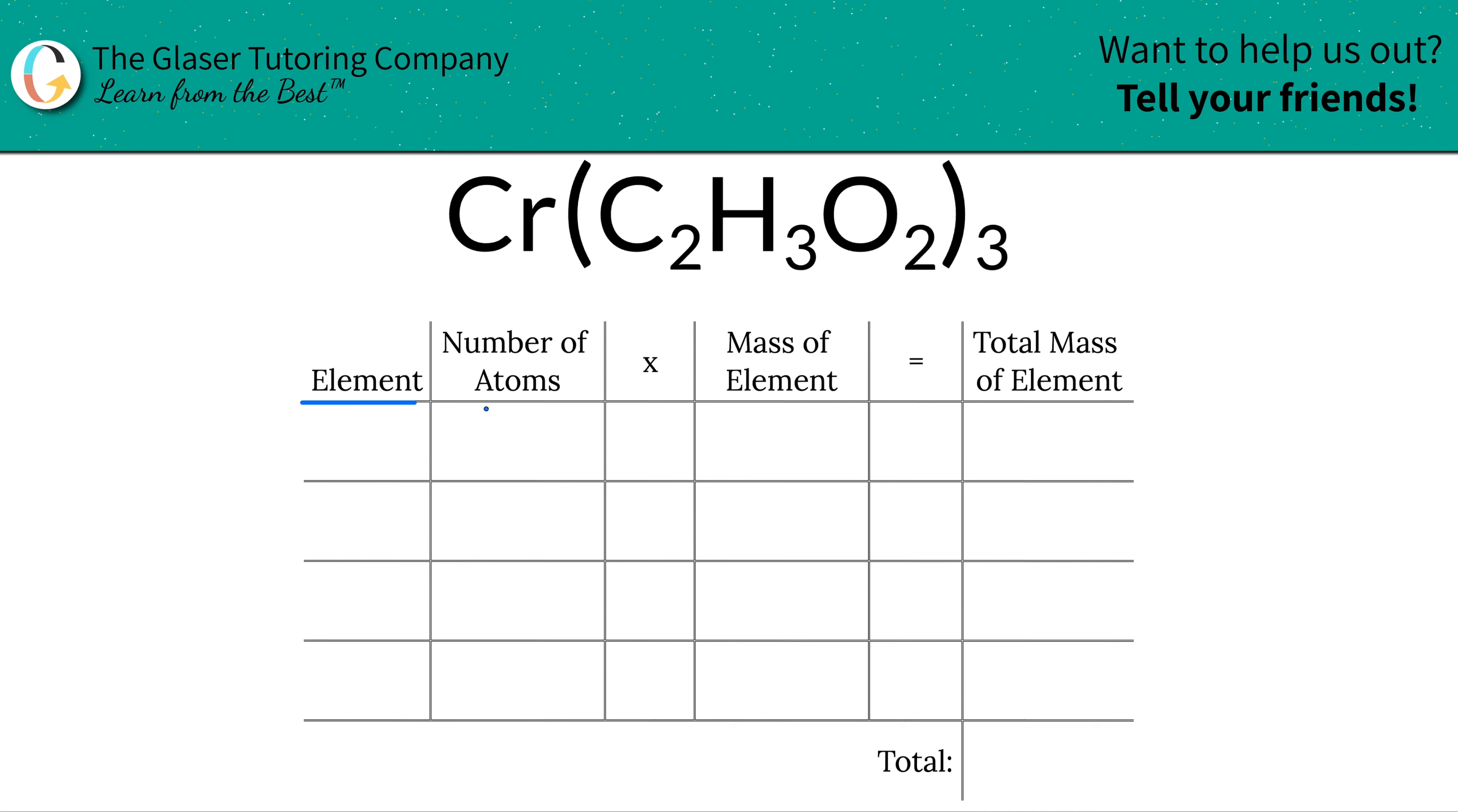So the first thing I'm going to do is write down the elements I see in the compound. I see chromium, carbon, hydrogen, and oxygen.